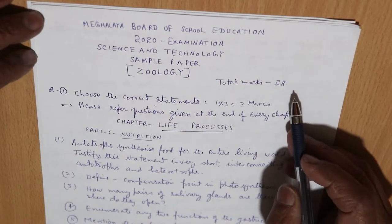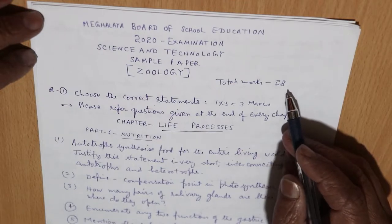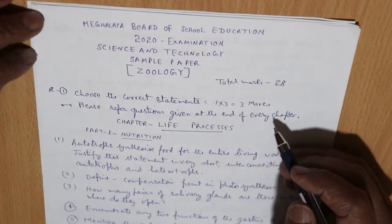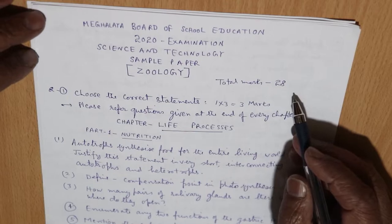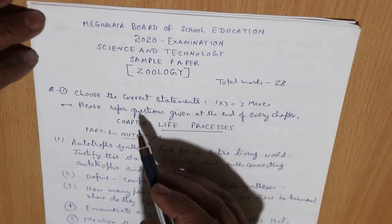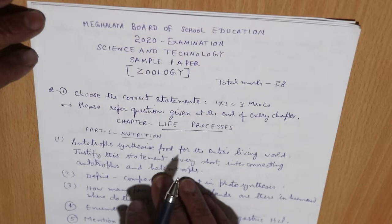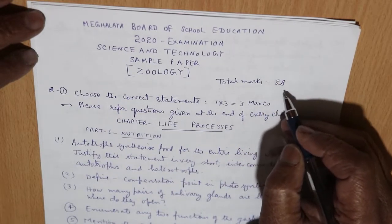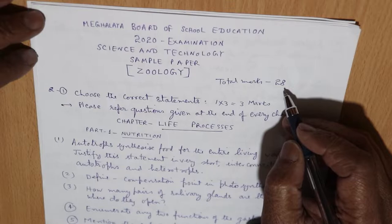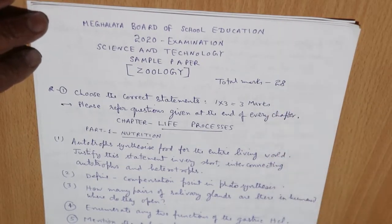The biology part will contain the same type of questions as earlier in chemistry and physics, with the same marking scheme — one mark, two mark, three mark, and five mark questions. However, the total marks have increased. Before, in chemistry and physics, it was 26 marks; now it is 28 marks. You'll get two marks more in geology.